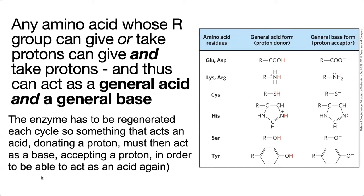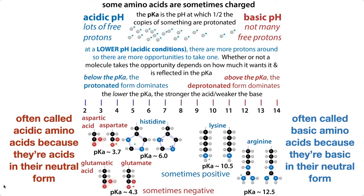When we talk about a general acid or a general base, this is not referring to what we typically classify as the basic or the acidic amino acids. Yes, those ones can participate — the basic ones can act as acids and the acidic ones can act as bases — but when we call something basic or acidic in the context of classifying amino acids, we do that because we're referring to how they act in their neutral form.